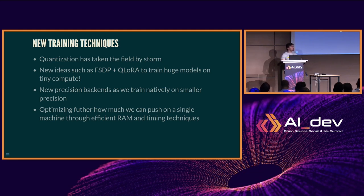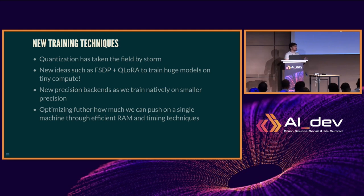New precision backends as we learn more about applying quantization methods on bare metal — FP8 backends from Transformer Engine, MSAMP out of Microsoft, and Nanotron by us. We're also figuring out that GPUs are no longer the slowest part — the challenge is how do we load data fast enough, move models fast enough, and optimize CPU downtime so models can keep training as fast as possible.